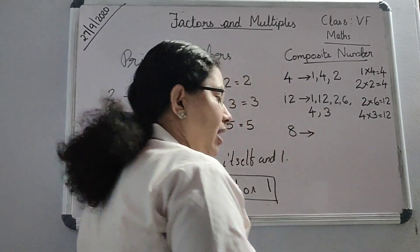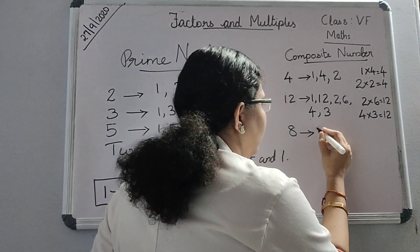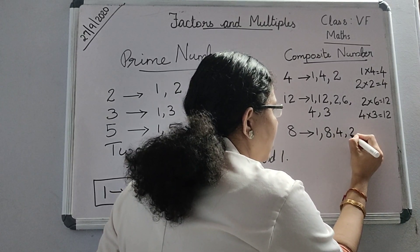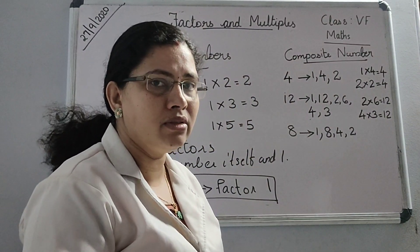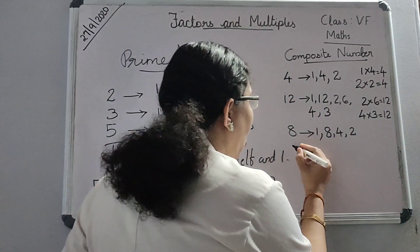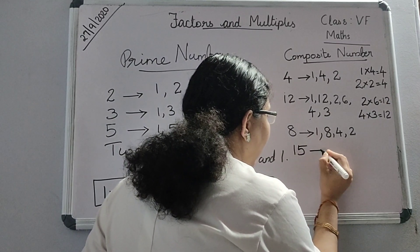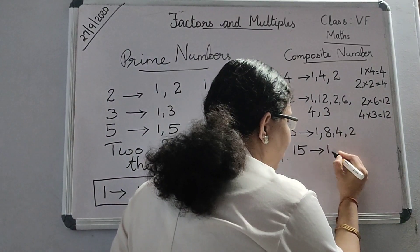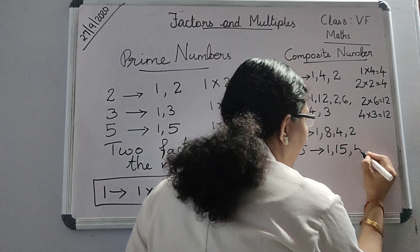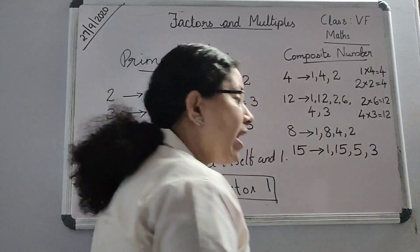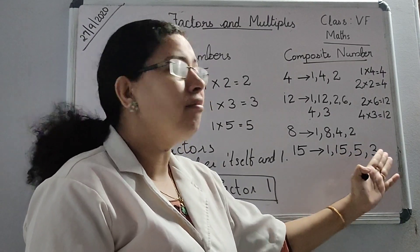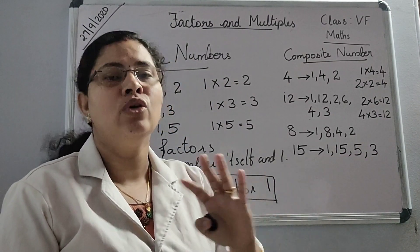Let us check another number: 8. 1 is a factor, 8 is a factor. If I multiply 4 into 2, I get 8. So there are 4 factors for 8. It can be applied to any odd number also. For 15: 1 is a factor, 15 is a factor, and when I multiply 5 into 3, so 5 and 3 are also factors. How many factors are there? 4 factors: 1, 15, 5, and 3.